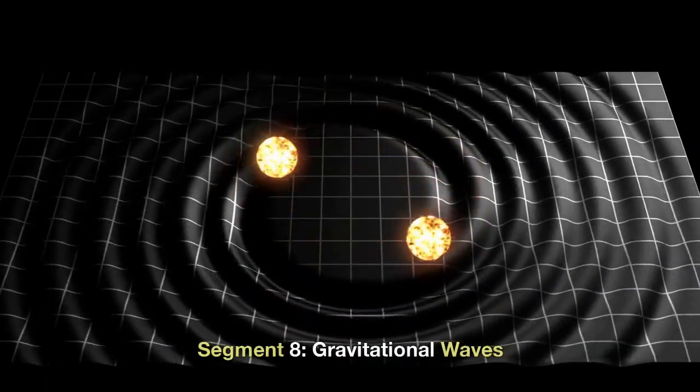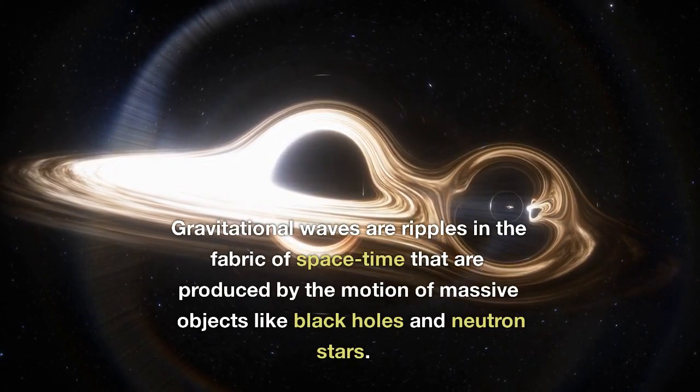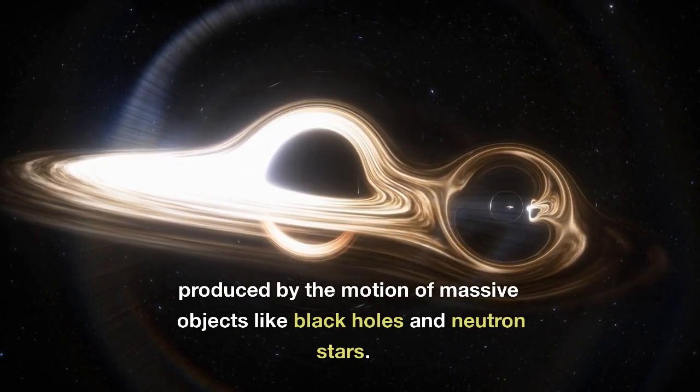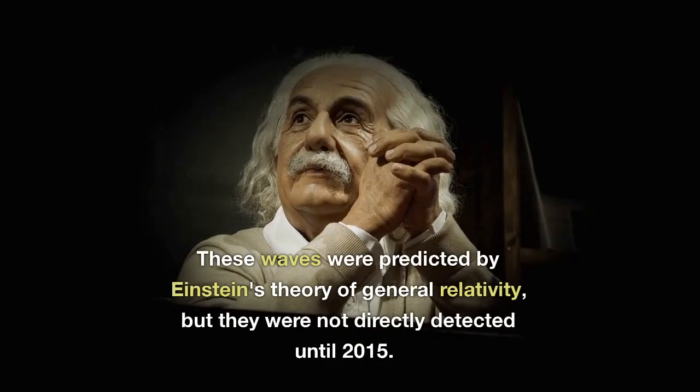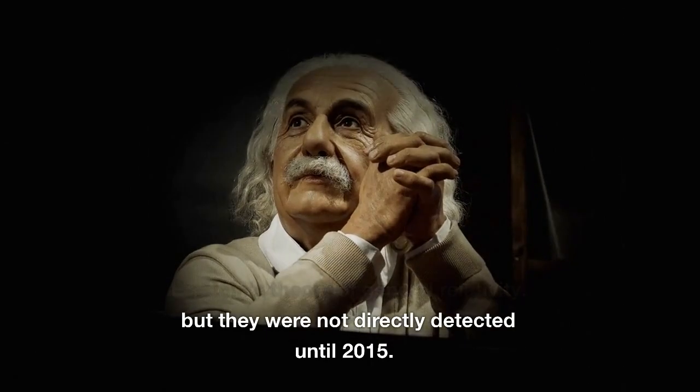Gravitational Waves. Gravitational waves are ripples in the fabric of space-time that are produced by the motion of massive objects like black holes and neutron stars. These waves were predicted by Einstein's theory of general relativity, but they were not directly detected until 2015.